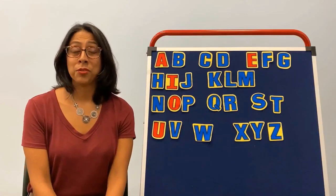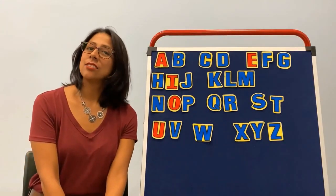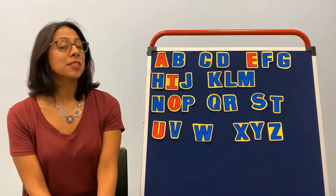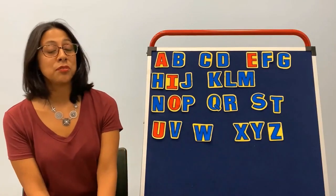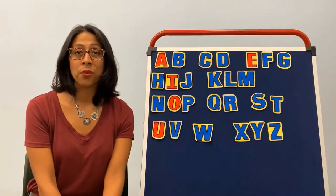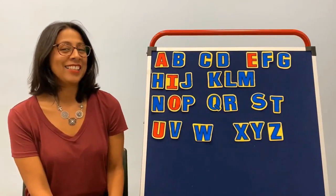You know the tune, Mary Had a Little Lamb? I'll sing it for you. Mary had a little lamb, little lamb, little lamb. Mary had a little lamb whose fleece was white as snow. So let's try the alphabet in the Mary Had a Little Lamb tune.